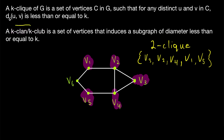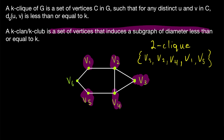From what I've seen, these two terms are typically used in different papers to mean the same thing. So one paper might call them K-clans, one paper might call them K-clubs, but they're typically talking about the same thing — which is a set of vertices that induces a subgraph of diameter less than or equal to K.